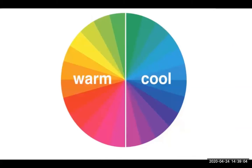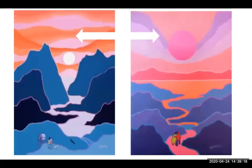Remember, warm colors are the ones that almost make us feel hot inside — the yellows and oranges and reds — whereas the cool colors are the calming, lighter colors: the blues and purples and greens. He uses them very intentionally, oftentimes placing warm colors in the background or in the sky, and then cool colors down in the land regions or the foreground.